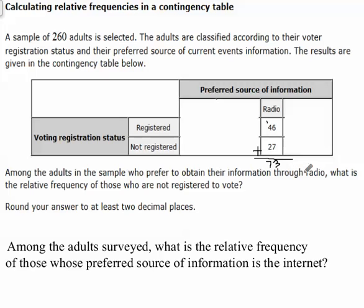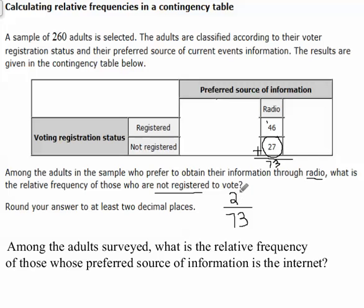That means there are 73 people in my survey. I'm going to make a fraction — in a fraction, the total always goes in the denominator, and the numerator is our part or the part of the whole that we have. We want to know the number of people who are not registered voters who prefer radio. Not registered voters is our 27, so that becomes the numerator of our fraction. Now we need to determine the relative frequency, which we write as a decimal.